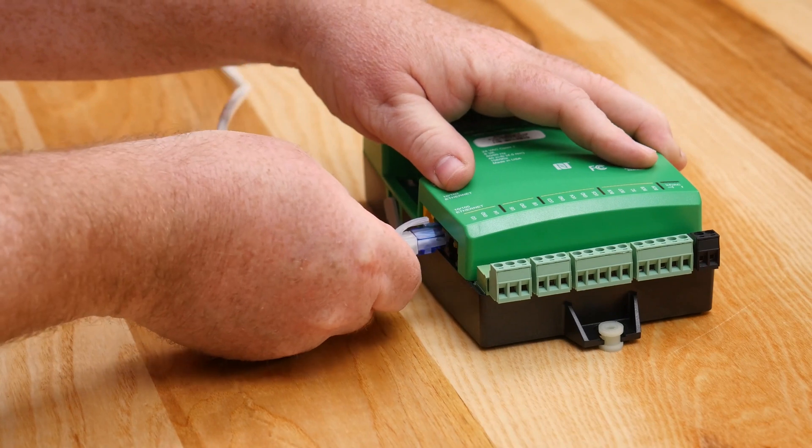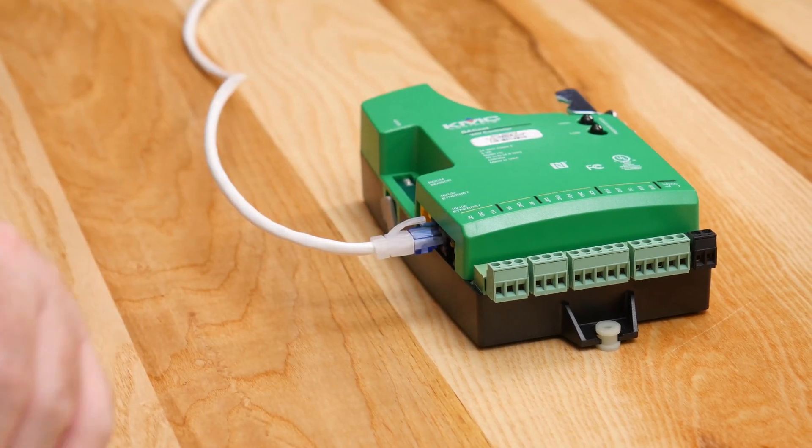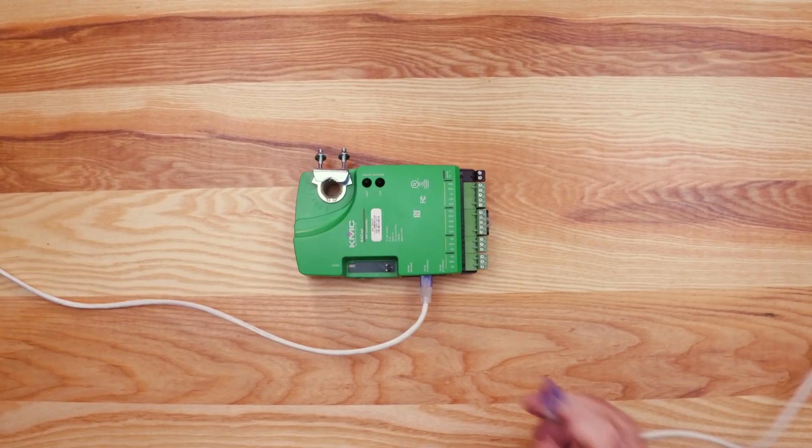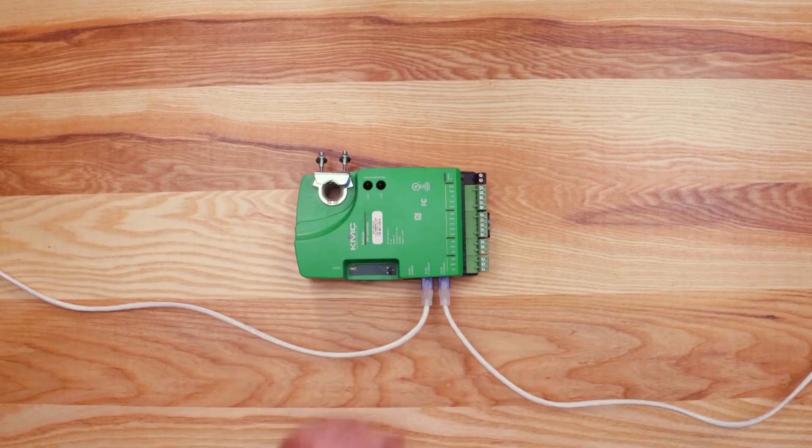So from the previous controller on the network, plug the Ethernet cable into one of the ports. Then, to daisy chain to the next controller, plug another cable into the second port.